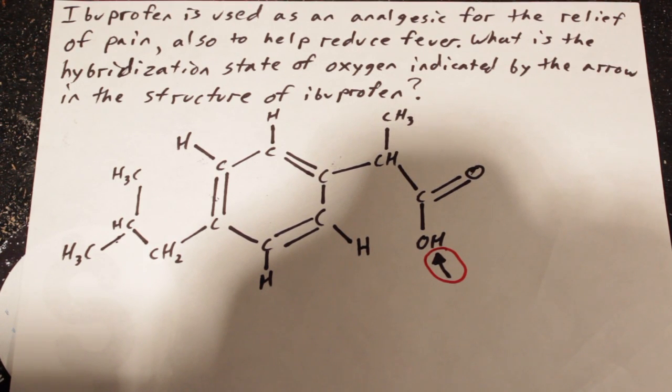Ibuprofen is used as an analgesic for the relief of pain, also used to help reduce fever. What is the hybridization state of the oxygen indicated by the arrow of the structure of ibuprofen?